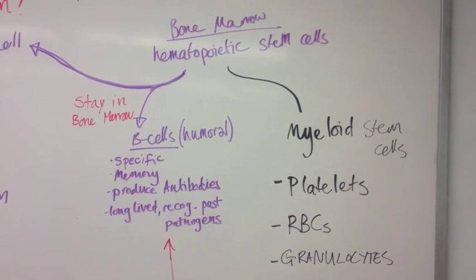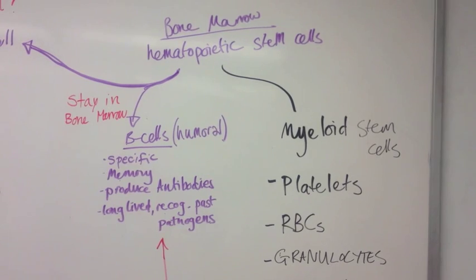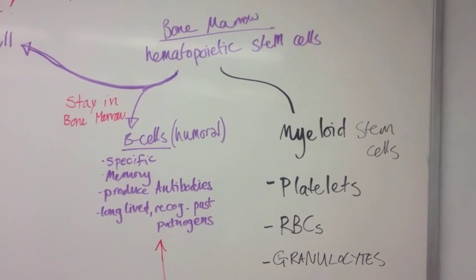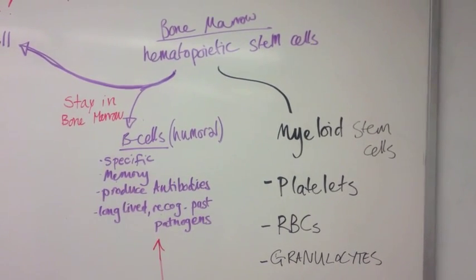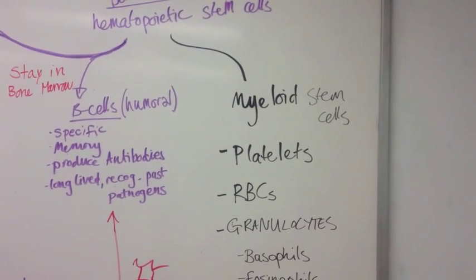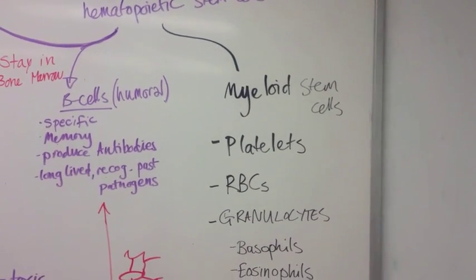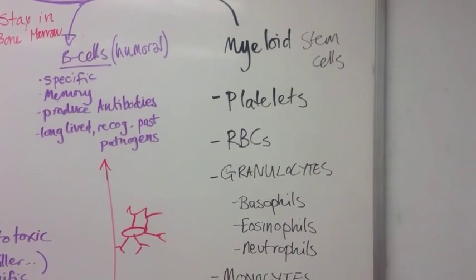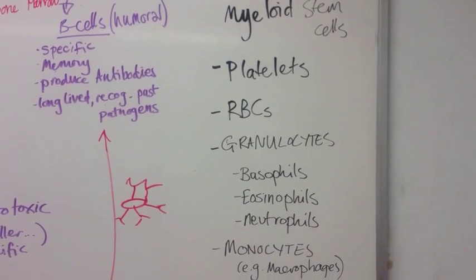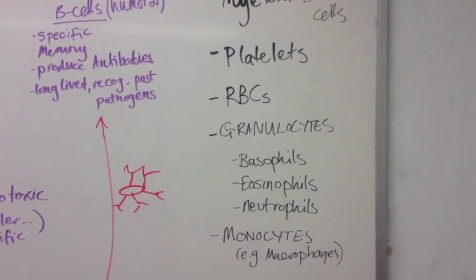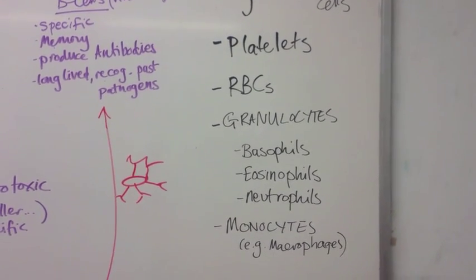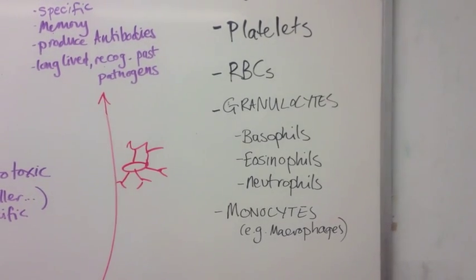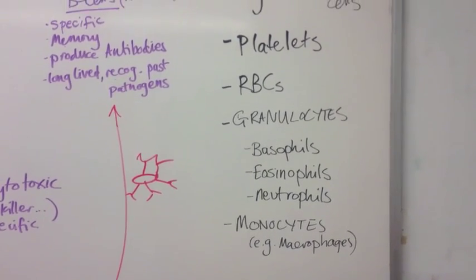In the bone marrow, hematopoietic stem cells are created. These differentiate either into myeloid stem cells, which then go on to become platelets, red blood cells, granulocytes such as basophils, eosinophils and neutrophils, or monocytes such as macrophages.